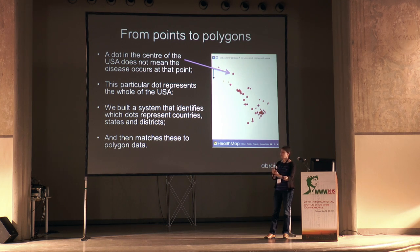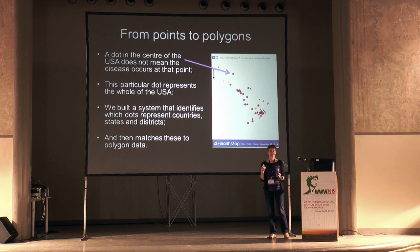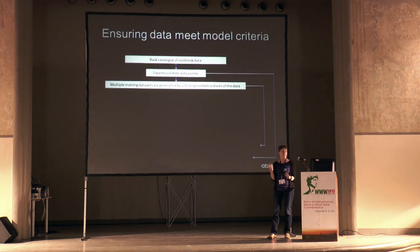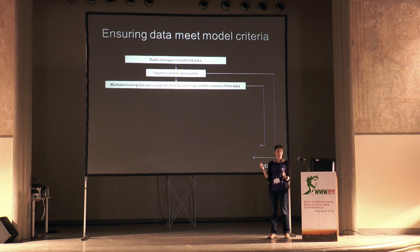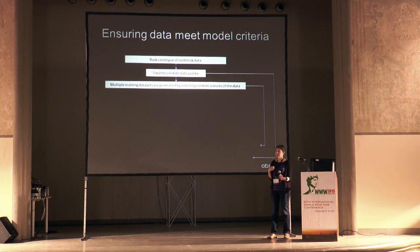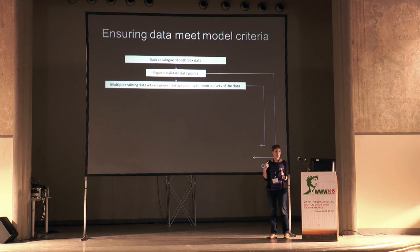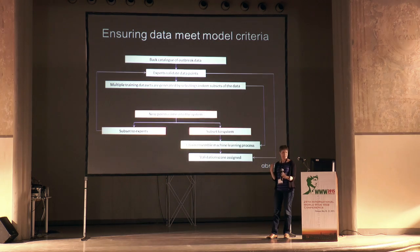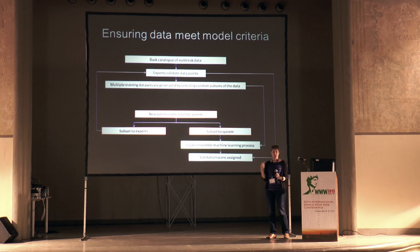In that way the model can account for uncertainty in locations. The next thing we want to do is be sure that the data represents one or more infections occurring at that location at that time. To do this, we've built a system where disease experts create a training data set by validating data points.